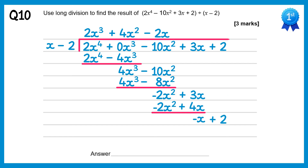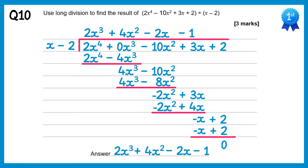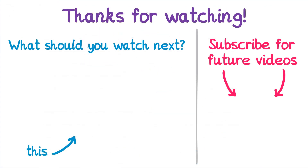Bring down that final term, plus 2. Do negative x divided by x which is negative 1. Multiply back through: negative 1 times x is negative x, negative 1 times negative 2 is positive 2. Subtract these and you'll get 0. And there we have it — the answer is 2x cubed plus 4x squared take away 2x take away 1. Thank you for watching this video. I hope you found it useful. Check out what I think you should watch next and subscribe so you don't miss out on future videos.